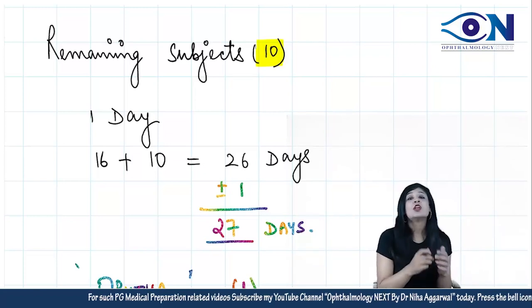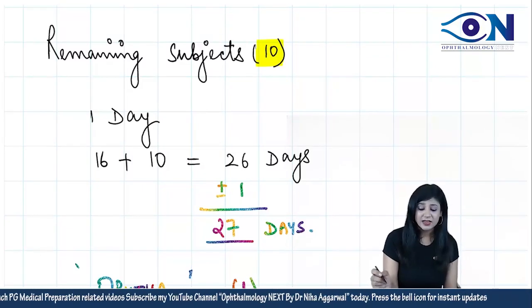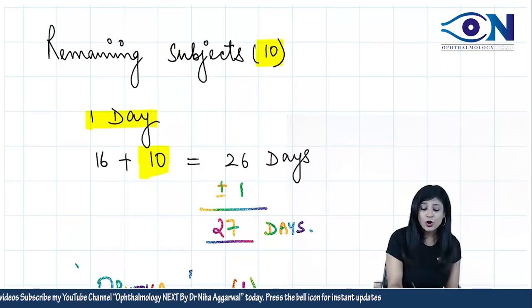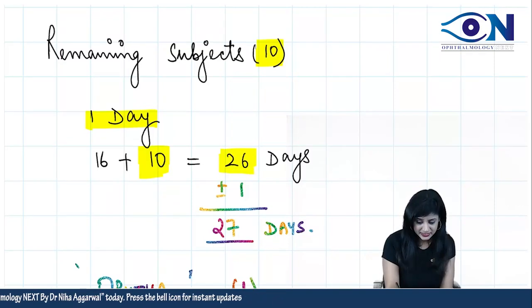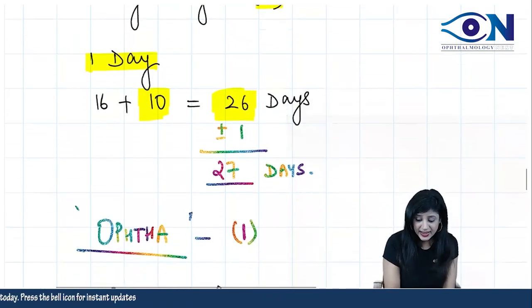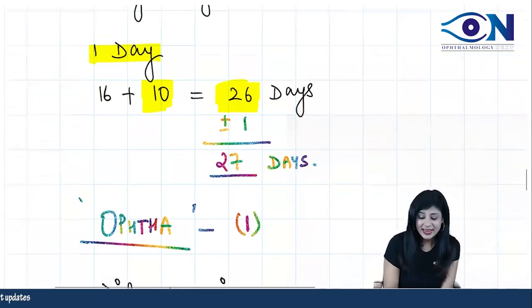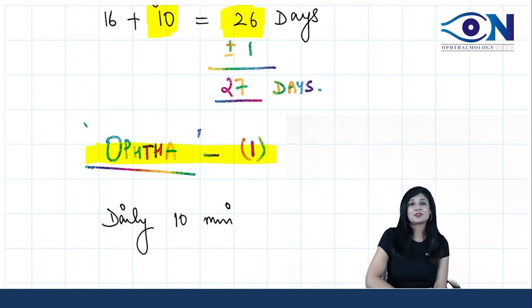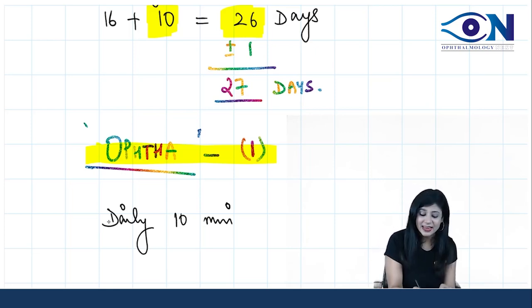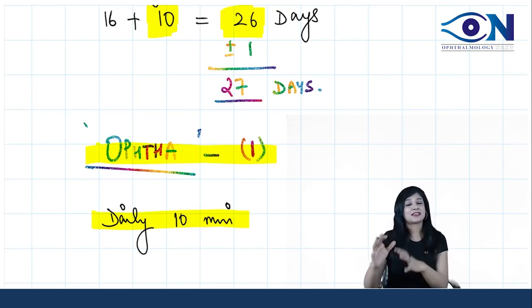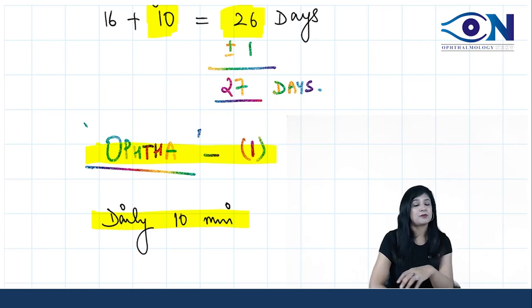What about the remaining subjects? Apart from these eight, you have got 10 more subjects. I am keeping ophthalmology separate. For the 10 subjects, we will give one day only. So this is 16 plus 10 equals 26 days. This one day extra is for ophthalmology. I have kept it as plus-minus because you have already revised ophthalmology in the first 50 days daily quiz, and again I am reminding you about these daily precious 10 minutes.